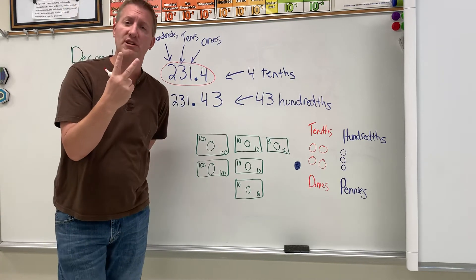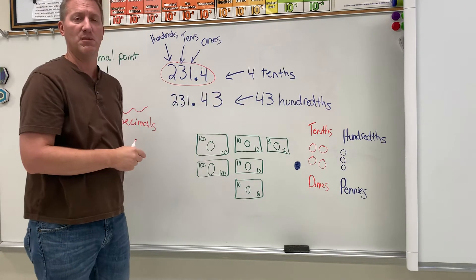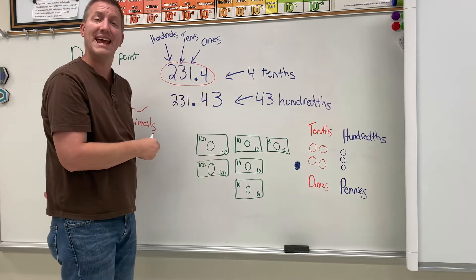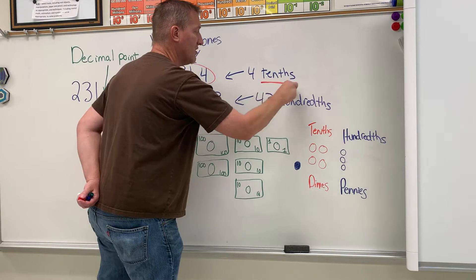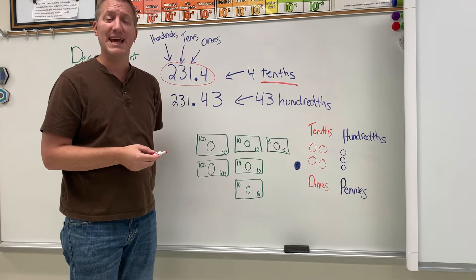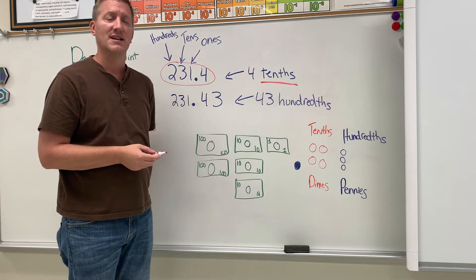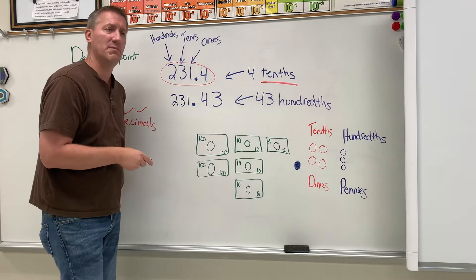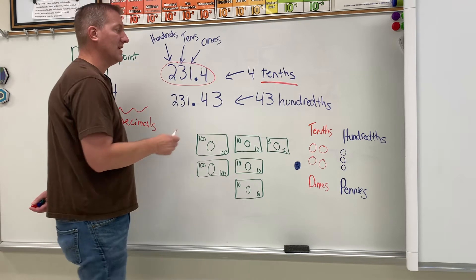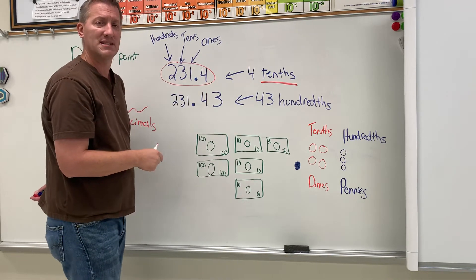This year as a fourth grader, you're gonna learn about two place values to the right of the decimal point. The first one is called tenths — it's like tens, but with a T-H at the end, so it's 'tenths.' Practice saying it at home a few times: tenths. So the first place value is the tenths place.